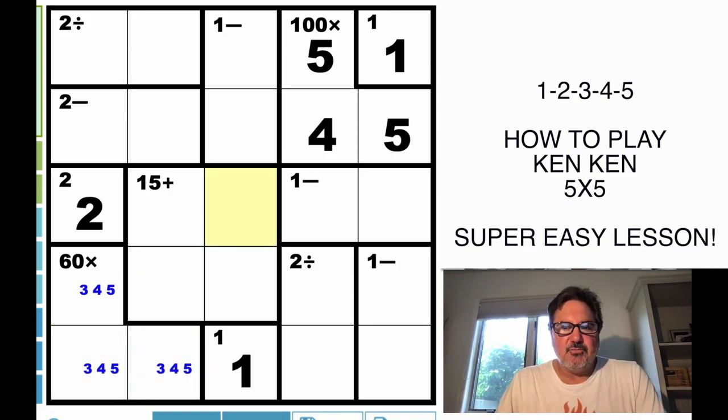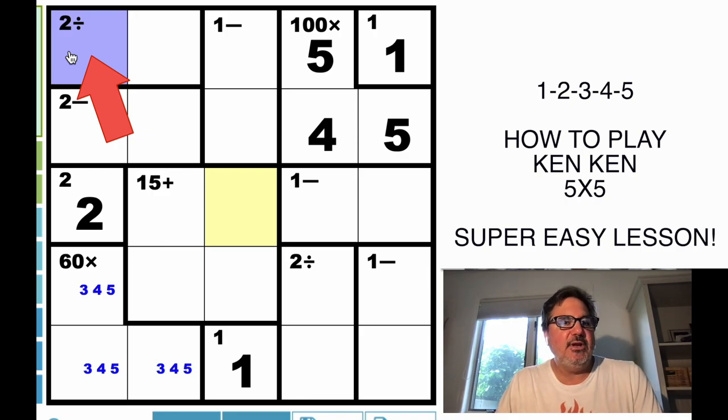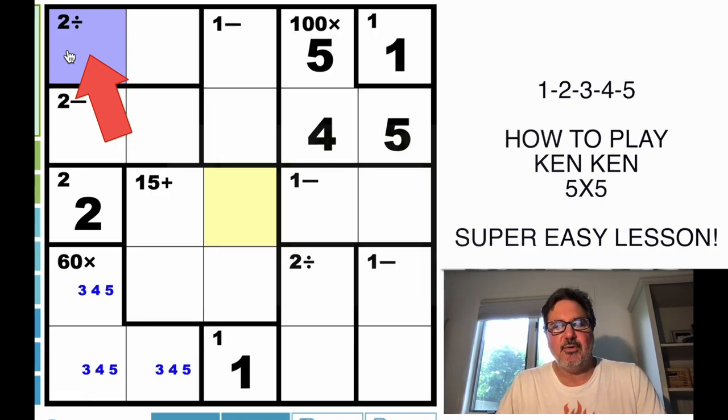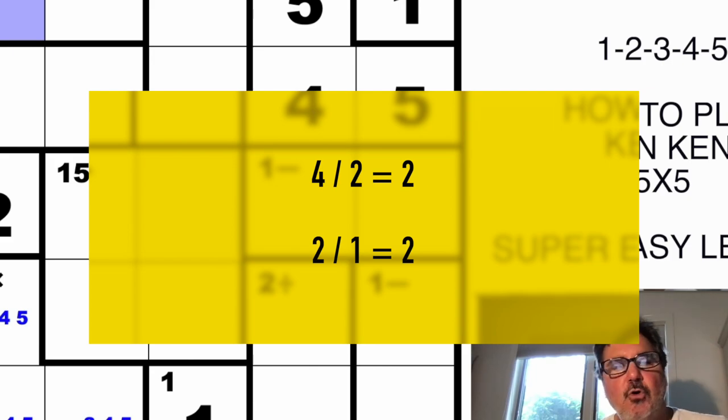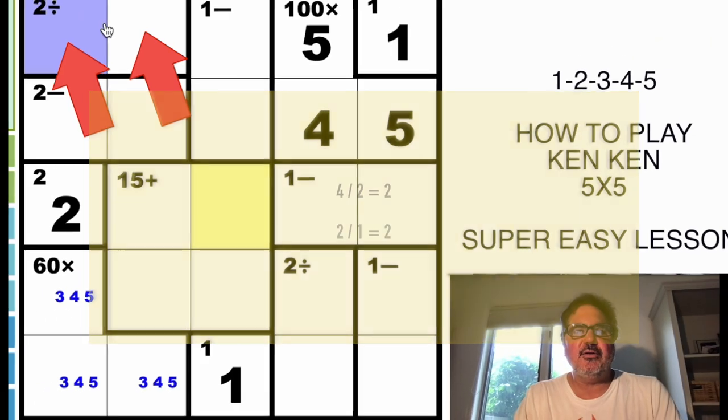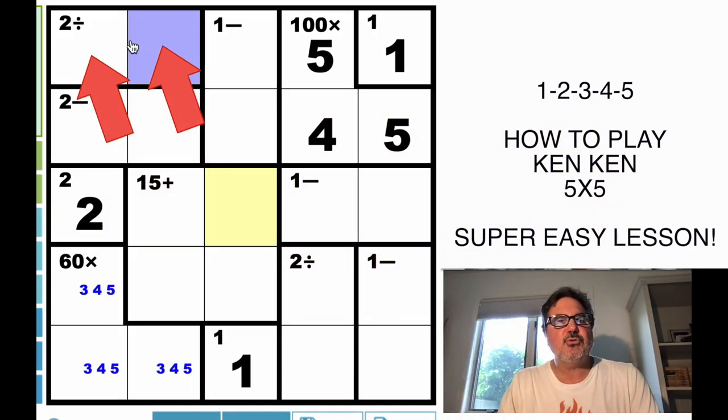So let's continue on with pencil marks. Up here we have a division, and it's something divided by something equals 2. And there's only really two combinations when you think about 1 through 5, since you can't have a remainder, to come up with 2. And that's going to be 4 divided by 2, or 2 divided by 1. So either these are a 4 and a 2, or these are a 2 and a 1.